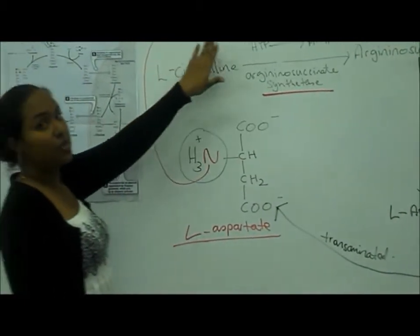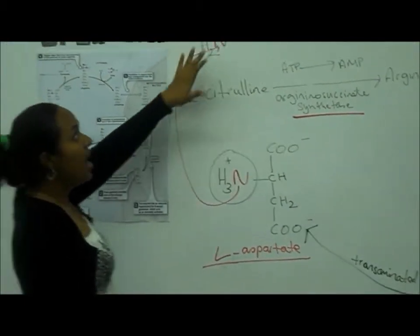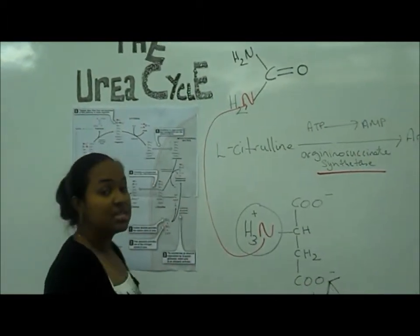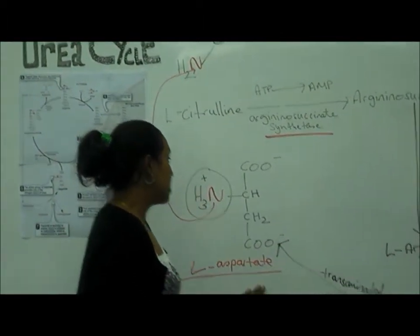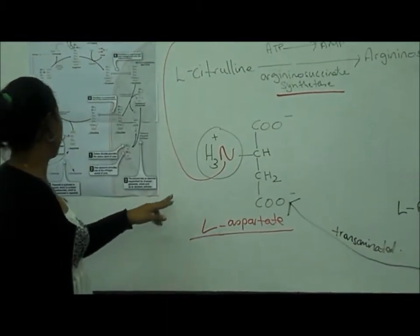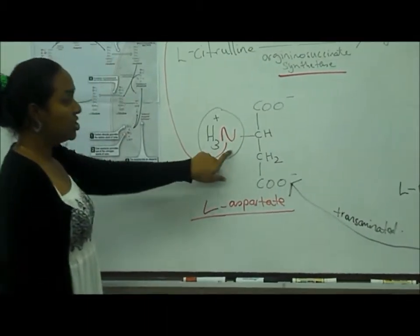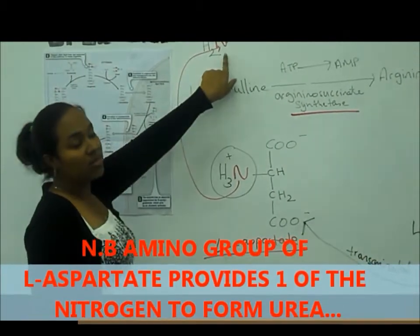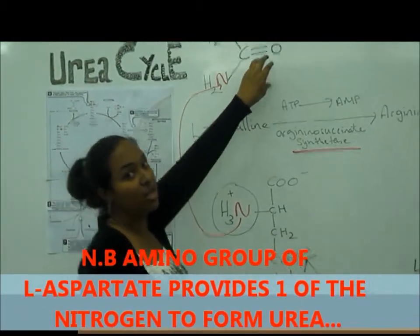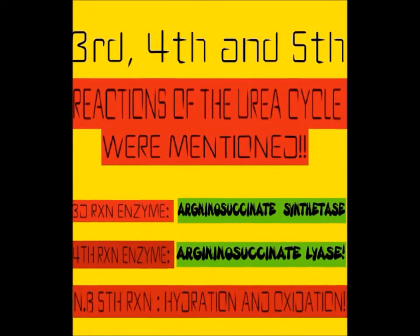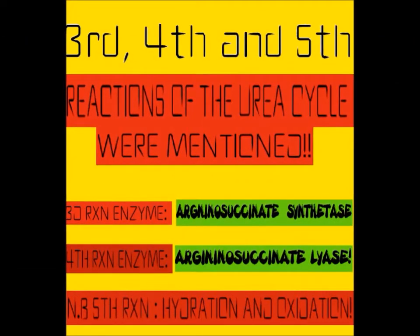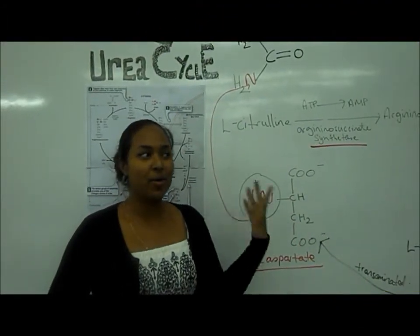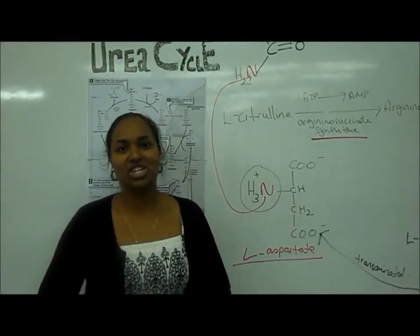Let's look at the structure of urea. Urea has two nitrogens. Looking at the structure of L-aspartate, the amino group of L-aspartate provides one of the nitrogens that forms urea. I will now pass you on to my biochemical colleague, Varsha Singh.